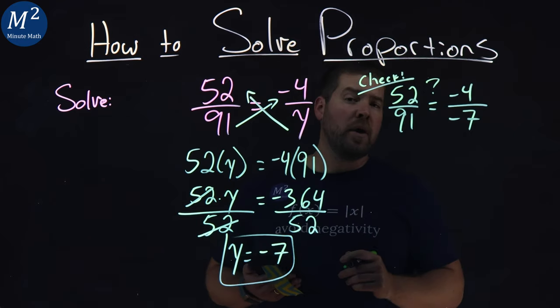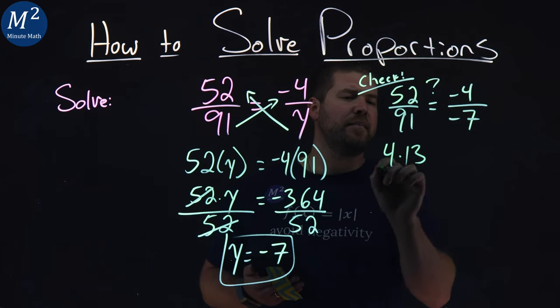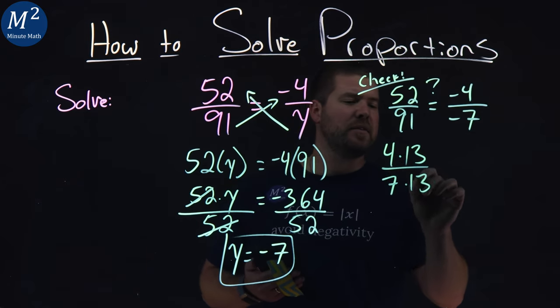Now, 52 and 91 are both divisible by 13. 52 is 4 times 13, and 91 is 7 times 13.